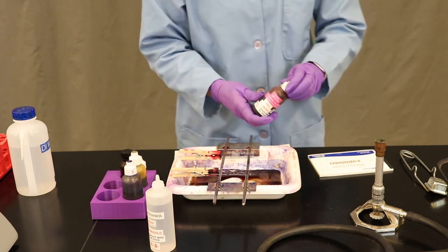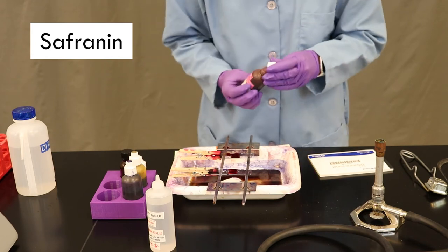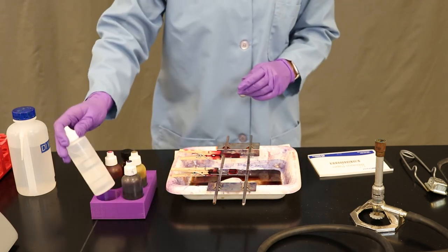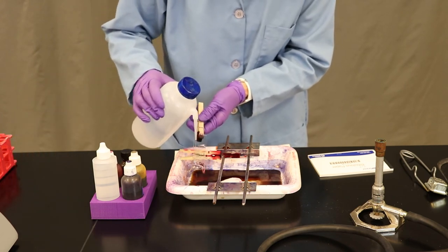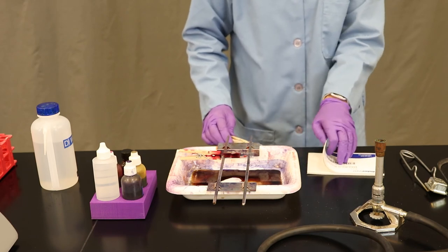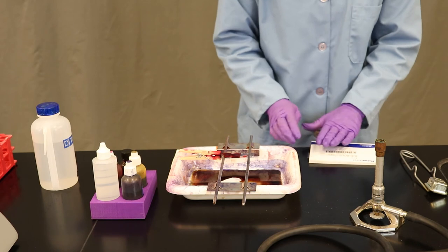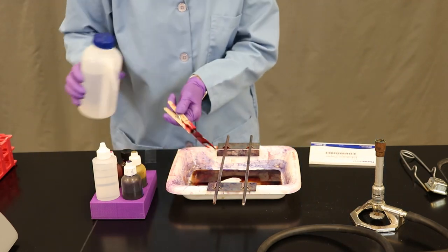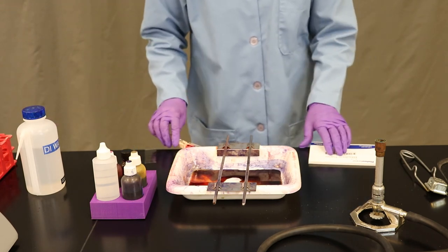Last but not least is the counter stain called safranin. Again, flood the boundary where your bacterial cells are located. You're going to keep the solution in place for up to 60 seconds. Once your 60 seconds is up, once again angle the slide and rinse off the safranin until the droplets run clear. Dry the glass slide by placing it between two sheets of bibulous paper and gently blotting the glass slide. Be careful, it's super easy to break it at this stage. Rinse your second slide and again blot dry.